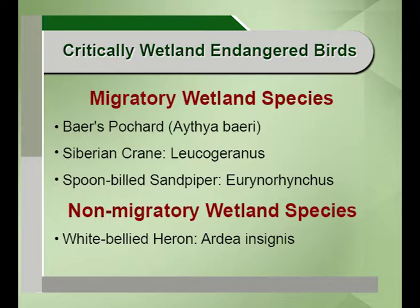Critically endangered wetland birds can be classified into migratory and non-migratory wetland species. In the migratory category, there are three endangered species: the baillon's crake, the Siberian crane and the spoon-billed sandpiper. Non-migratory wetland species include the white-bellied heron.